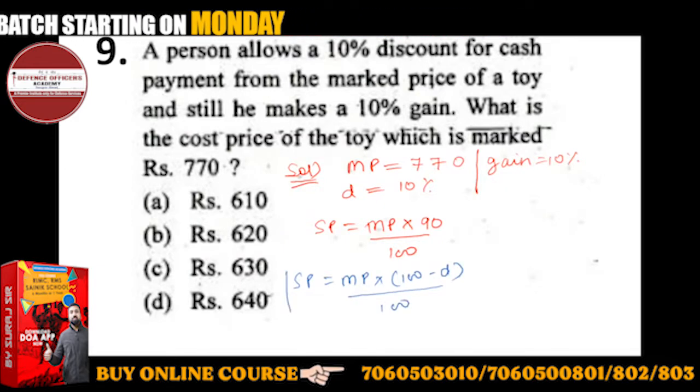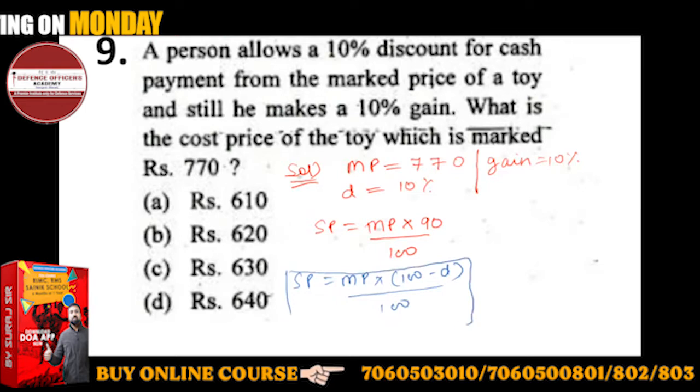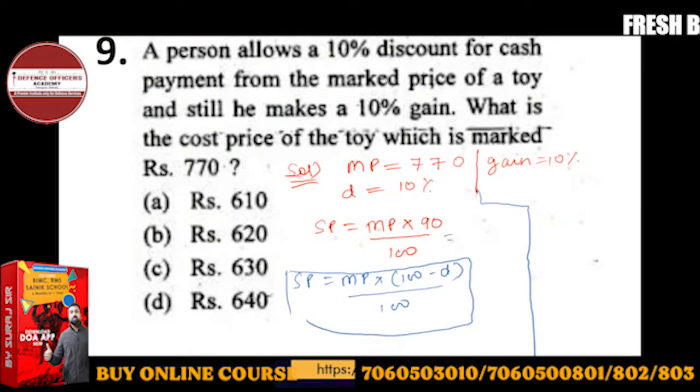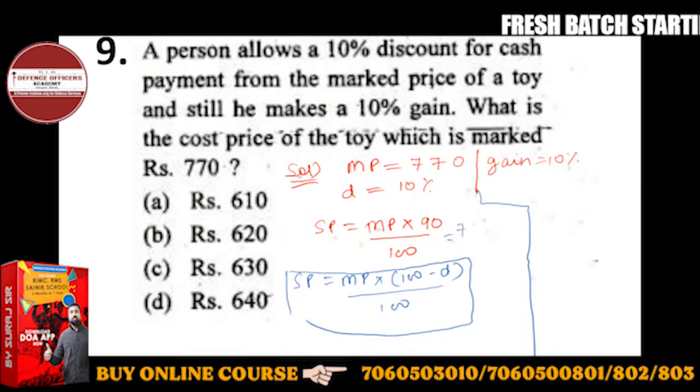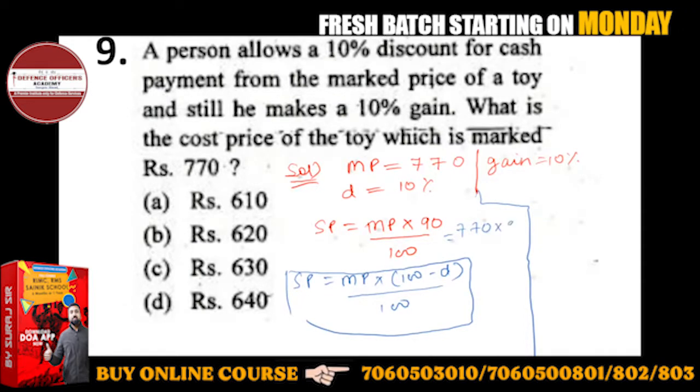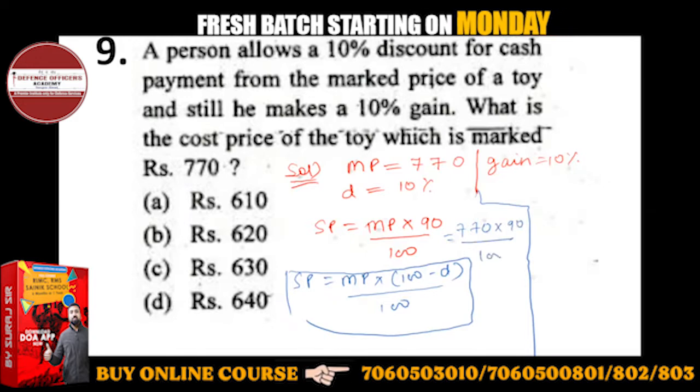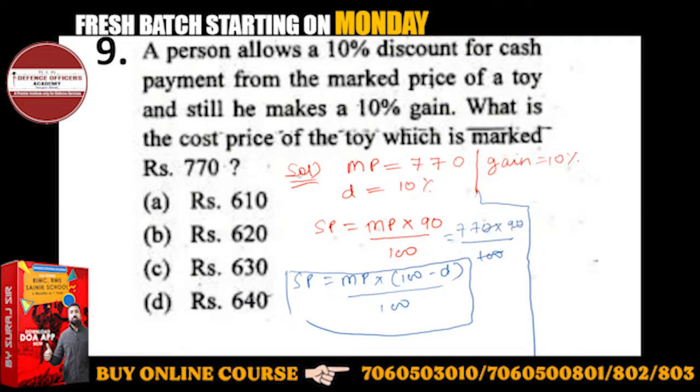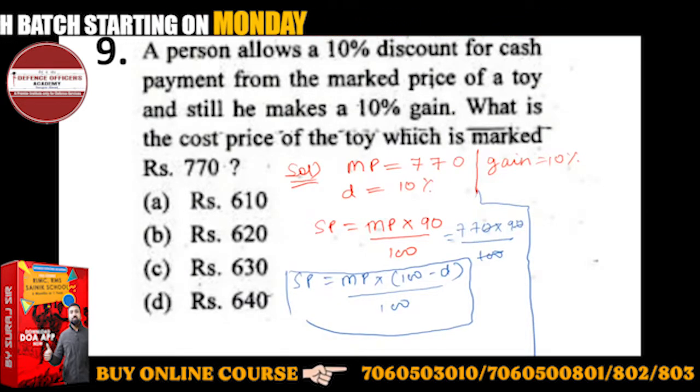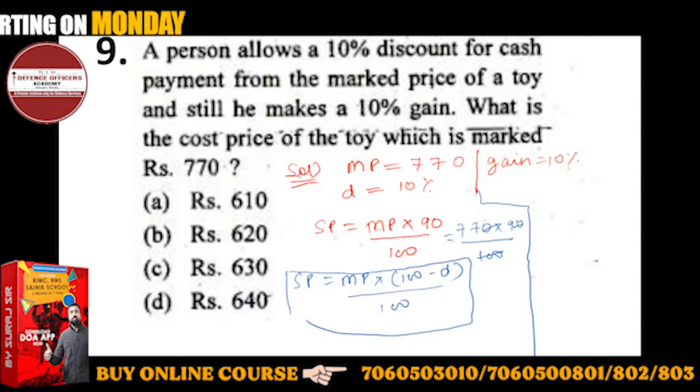If I will put the values, let's put the values. MP is how much? 770 into 90 upon 100. So this cancels. Okay, so here SP is a function of CP.